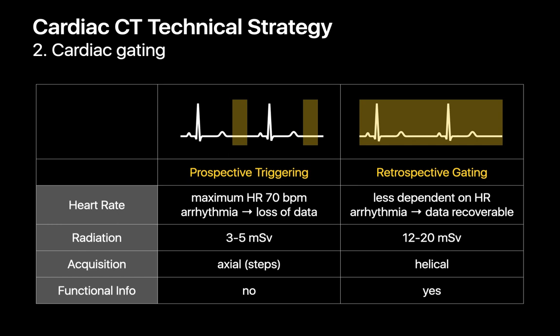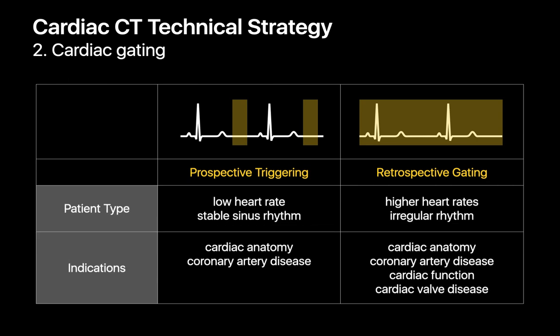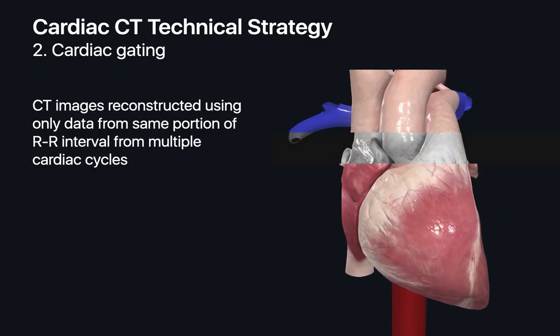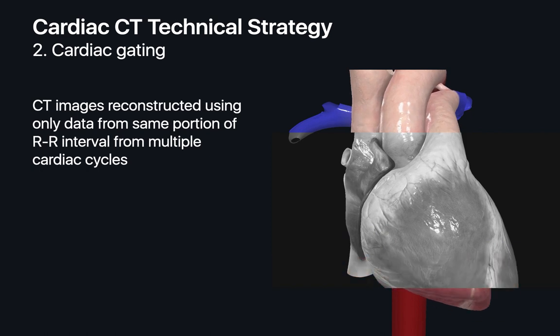The CT acquisition mode for prospective triggering is usually a step-and-shoot technique, while the CT acquisition mode with retrospective gating is a helical technique. Because you're scanning the patient throughout the entire cardiac cycle with retrospective gating, you can conceivably make a movie of an entire cardiac cycle and derive some functional information about the patient's heart. Prospective triggering tends to be a decent option for patients with low heart rates and stable sinus rhythm, while retrospective gating is better for patients with higher heart rates and irregular rhythms. Cardiac gating works by reconstructing slabs of the cardiac anatomy one slab at a time using data from a very particular fraction of each cardiac cycle.